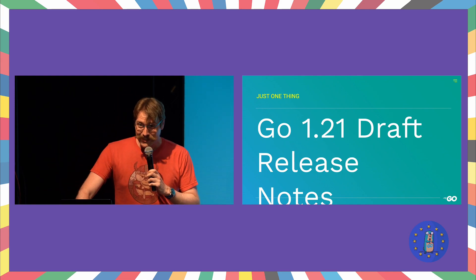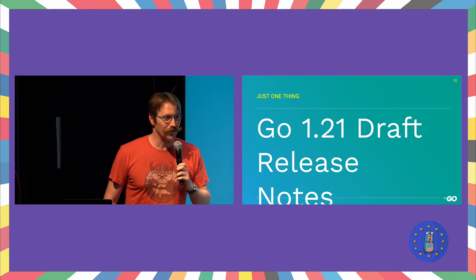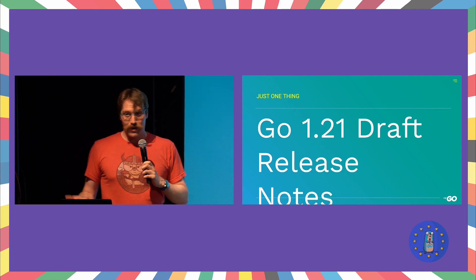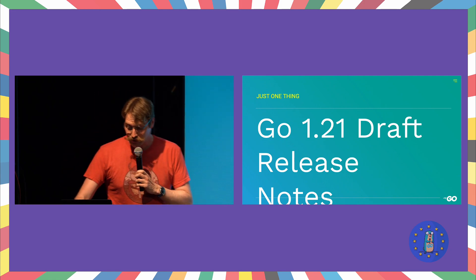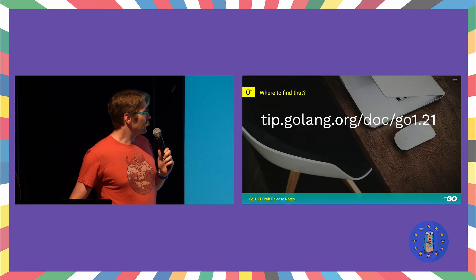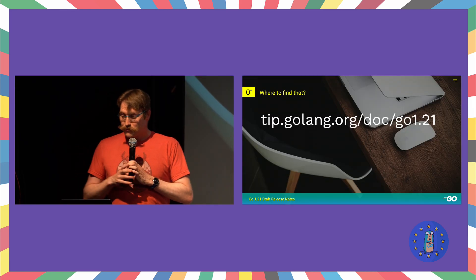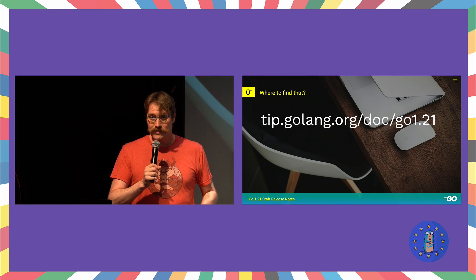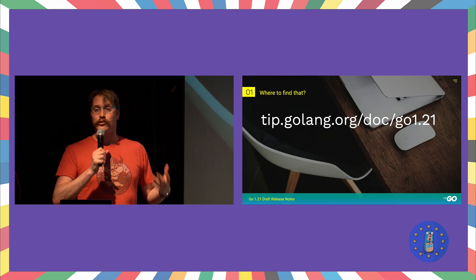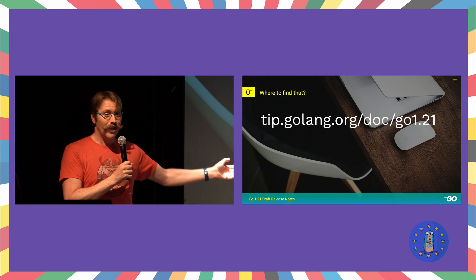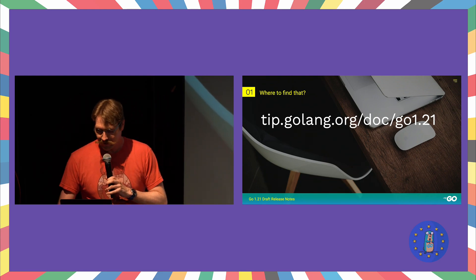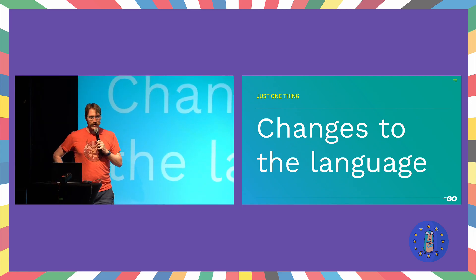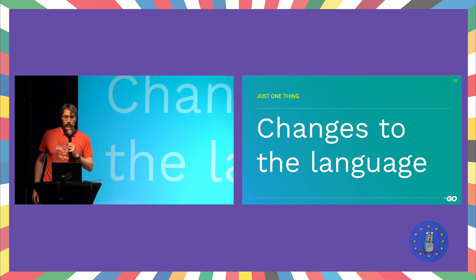Recently, the draft release notes for Go 1.21 got released, so I excitedly started reading them because, as a gopher, I'm very excited for all the new features that come out in each version. There was one particular change that was piquing my interest. About halfway through a release cycle is when the draft release notes start coming out, and you can find them at tip.golang.org. Specifically, the spot that really took my attention was the part about changes to the language.